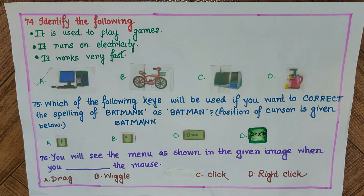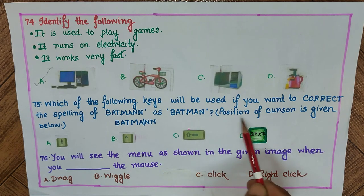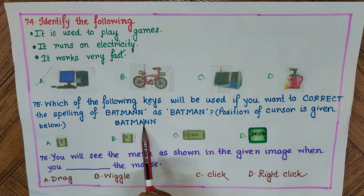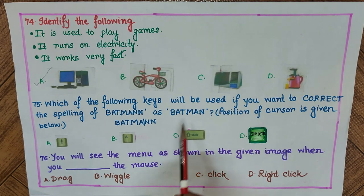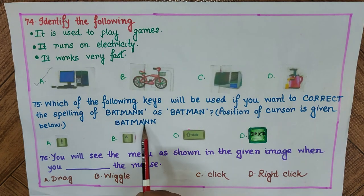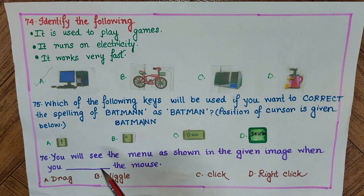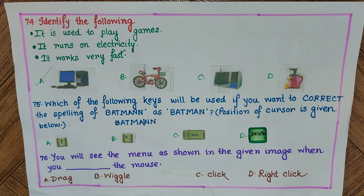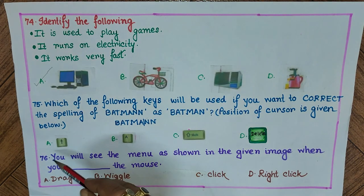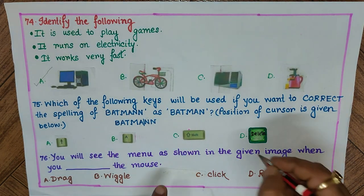Question 75: Which key will be used to correct the spelling of 'batman' which has two N's at the end? The cursor position is shown between A and the extra N. To delete this extra N, press the delete key once and it will be removed, giving the correct spelling. The answer is D) delete key.